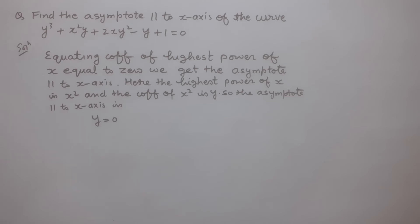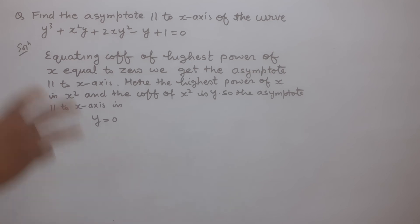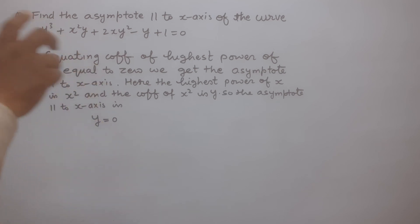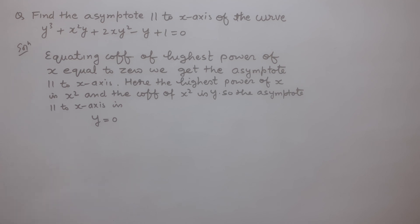When we equate the coefficient of the highest power of x — that is, the coefficient of x² — equal to 0, we get the asymptote parallel to the x-axis. In this given curve, y = 0 is the asymptote, which means y = 0 is the equation of the x-axis. So for this curve, the x-axis itself is the asymptote. Thank you.